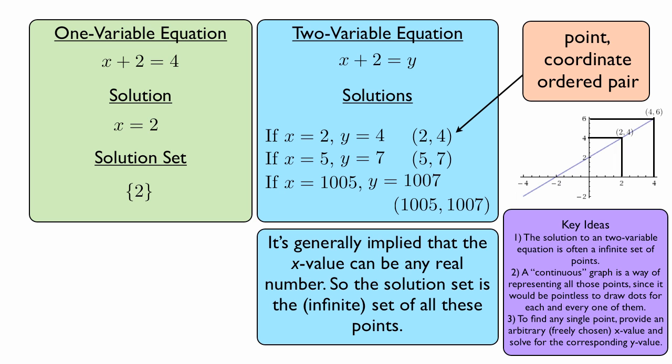And three, to find any single point on a graph, you can just provide an arbitrary, or freely chosen, x value and solve for the corresponding y value. That's what we did when we picked, say, x equals 2 and found that y equals 4.